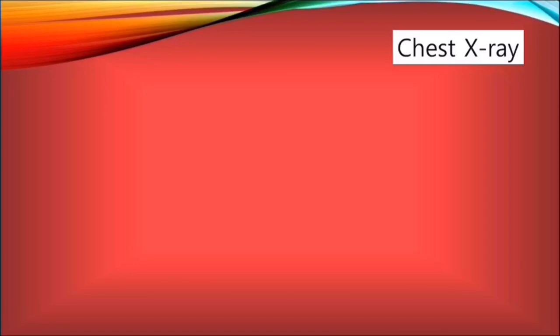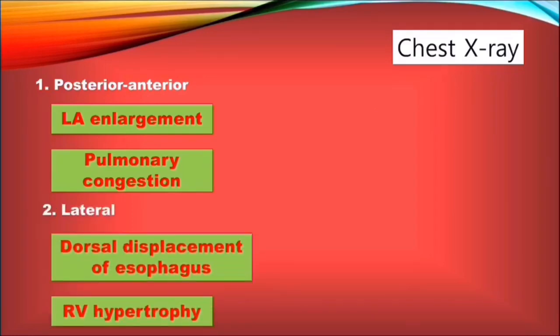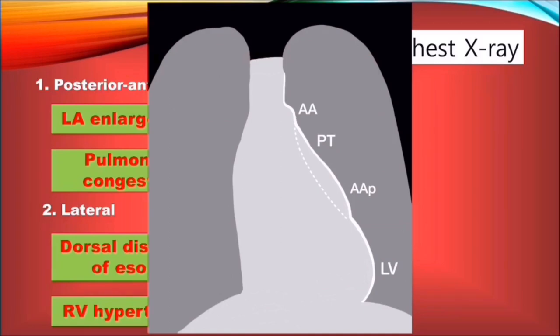In terms of chest X-ray, there are different findings depending on the view used. In the posterior-anterior view, we can observe left atrium enlargement with a prominent left appendage straining the left cardiac border, and pulmonary congestion. In a lateral view, dorsal displacement of the esophagus is noticed because of the large left atrium, alongside likely right ventricular hypertrophy. In this improvised posterior-anterior X-ray, we can observe a clear straining of the left cardiac border, with the normal configuration indicated by the dashed line. Starting from the top, we can observe the silhouettes of the aortic arch, the pulmonary trunk, the left atrial appendage, and the left ventricle.